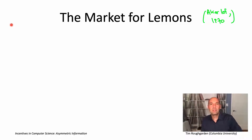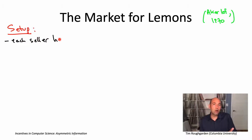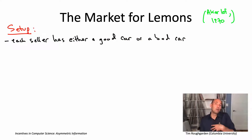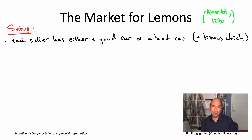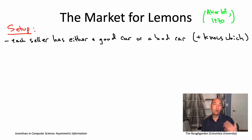We're going to think about a market for used cars. There's going to be a bunch of cars on the market, each one with a single seller, and each car is going to be either good or bad. As a seller, you know whether you have a good car or a bad car. Sellers of bad cars have a value of four — they'd sell for a price of four or higher. Sellers of good cars would accept any offer at ten or above.